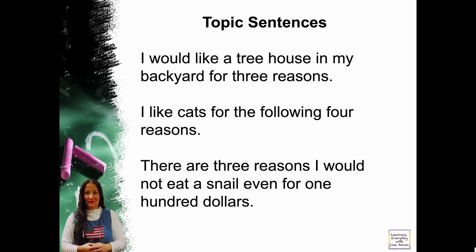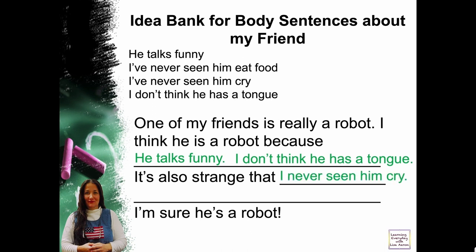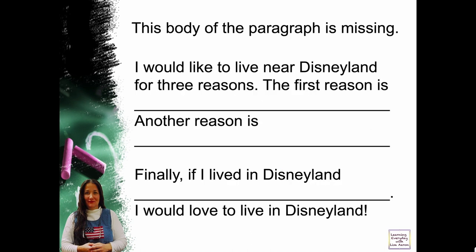Topic sentences. 'I would like a tree house in my backyard for three reasons.' 'I like cats for the following four reasons.' 'There are three reasons I would not eat a snail even for one hundred dollars.' Idea bank for body sentences about my friend: 'He talks funny. I've never seen him eat food. I've never seen him cry. I don't think he has a tongue.' One of my friends is really a robot: 'I think he is a robot because...' Give the reasons. He talks funny. I don't think he has a tongue. It's also strange that I've never seen him cry. I've never seen him eat food. I'm sure he's a robot.